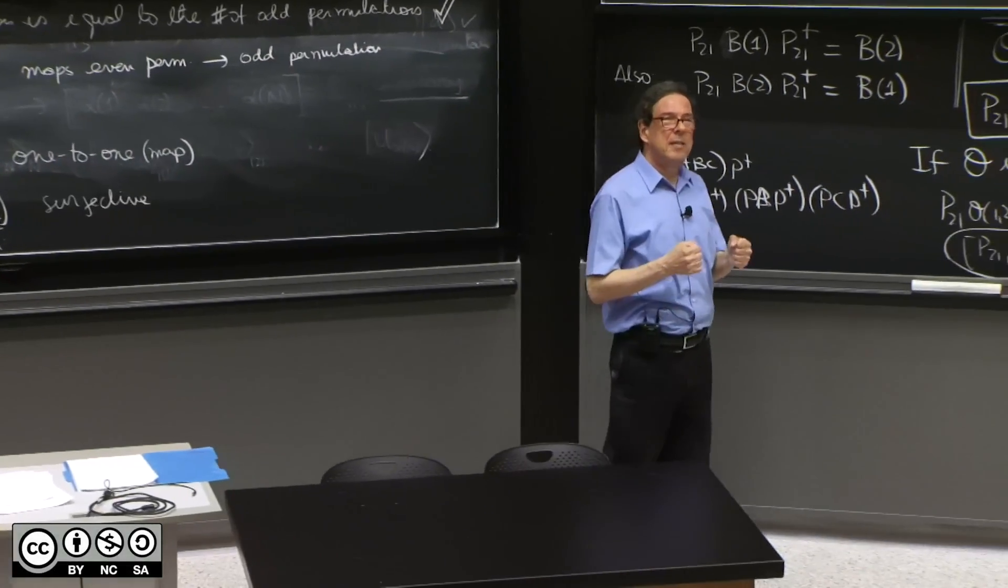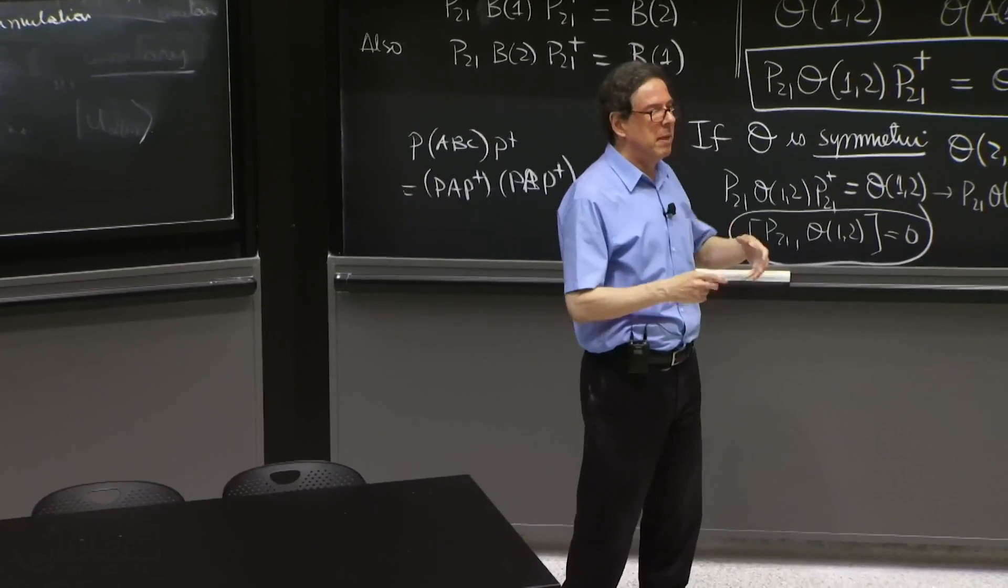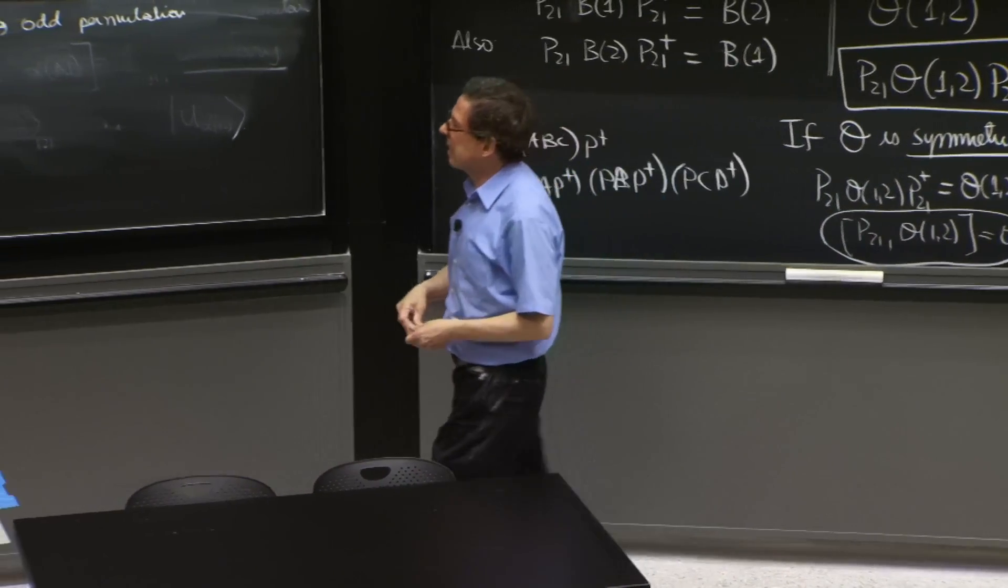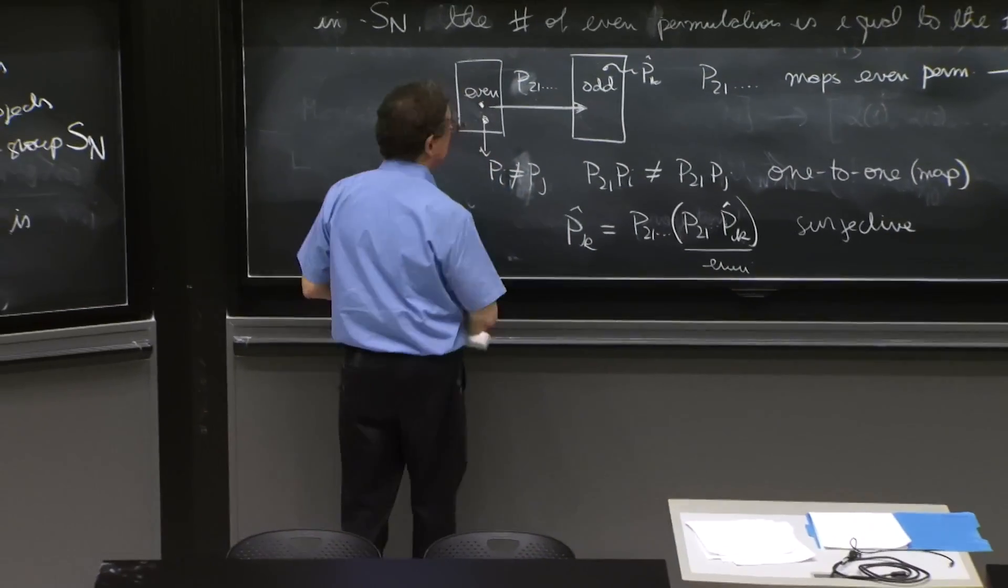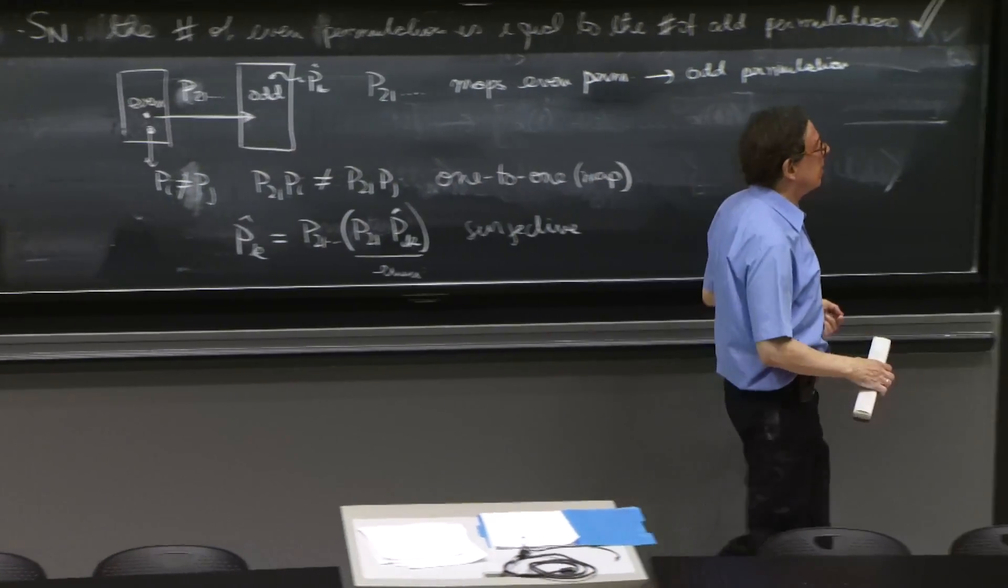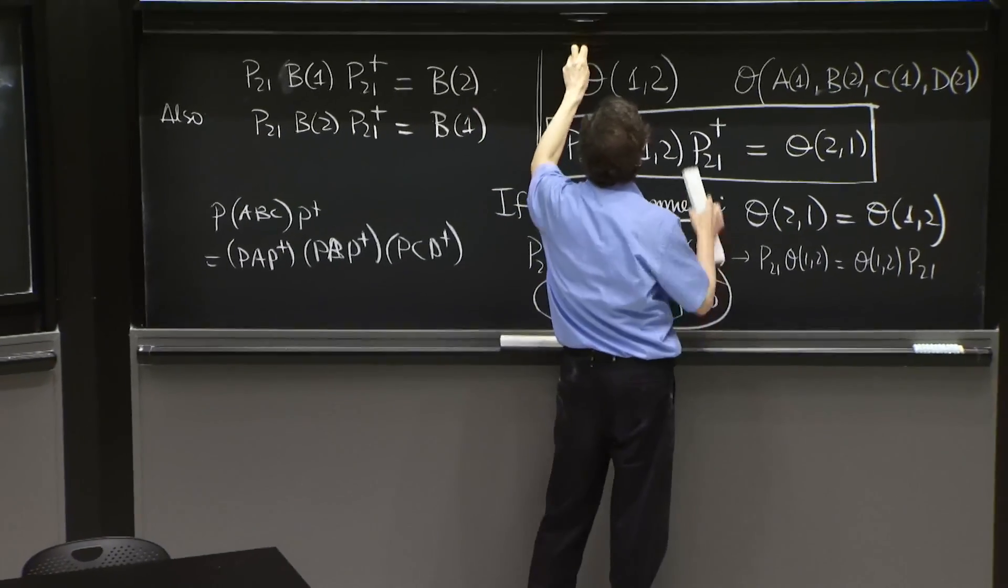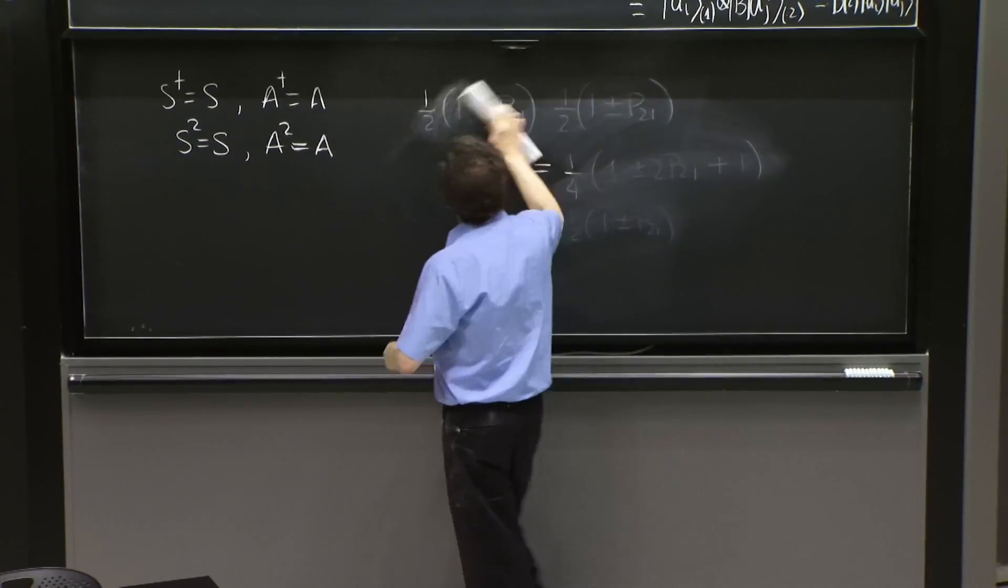With this, we can face the construction of the operators that are going to help us build totally symmetric states and totally anti-symmetric states, and understand why this solved the problem of degeneracy, exchange degeneracy. So let us look into that.